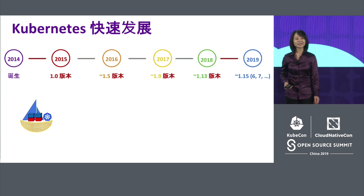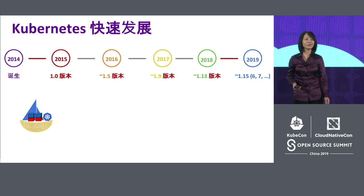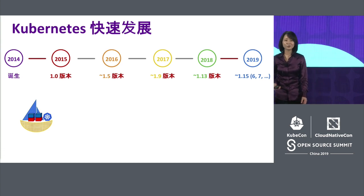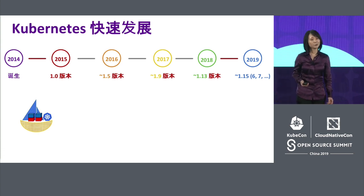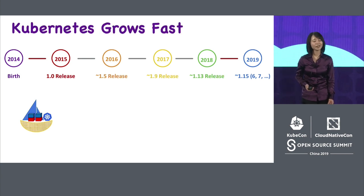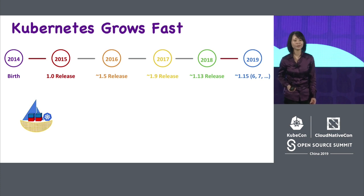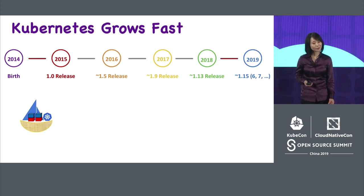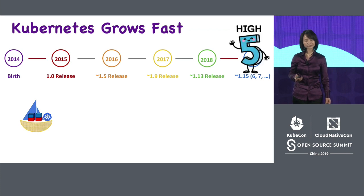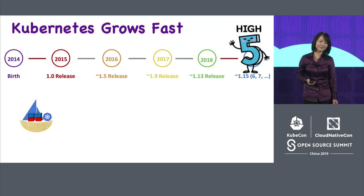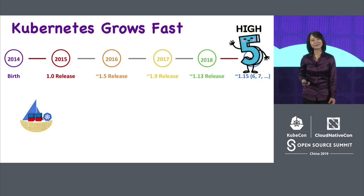To understand SIG architecture's point of view, let's go back in time to the very beginning of Kubernetes. In 2014, the first PR was submitted into the Kubernetes repo — Kubernetes was born. In 2015, we had the 1.0 release. Earlier this month, Kubernetes just passed five years old. Happy birthday, Kubernetes!